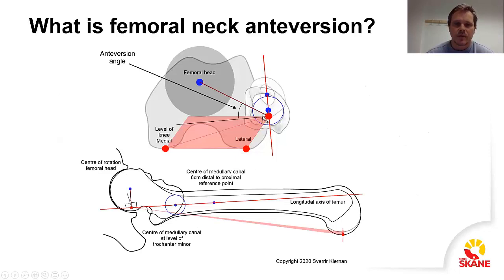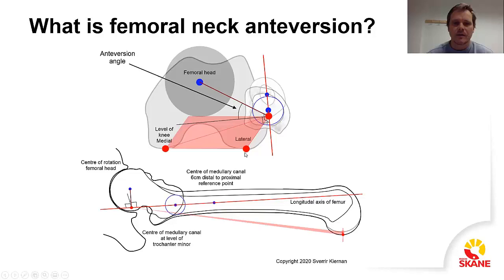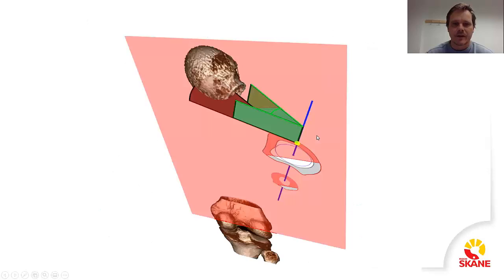To explain what anteversion — or proximal femoral neck anteversion — is, it's this angle that you can see here. The problem is to try to explain to people how you place this line. It's actually a line lying on top of a plane, and the plane is defined by these two points at the back of the knee, projected on this intersection point. Then you put a line 90 degrees from that line, on top of that plane, and you get the anteversion angle. This has been very hard to explain to people, and I can understand that.